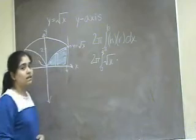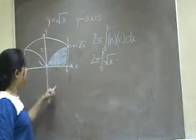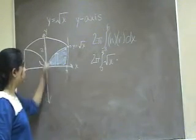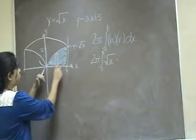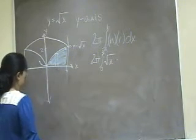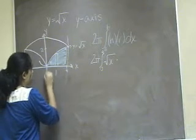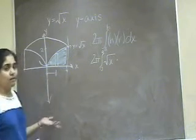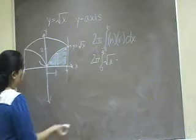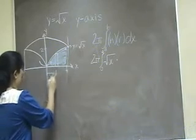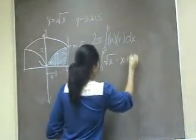And the radius is always the distance from the axis of rotation, so the y-axis to your rectangle. So basically we're talking about this distance right here. And in this case, that distance is just going to be x. So we have x, dx.